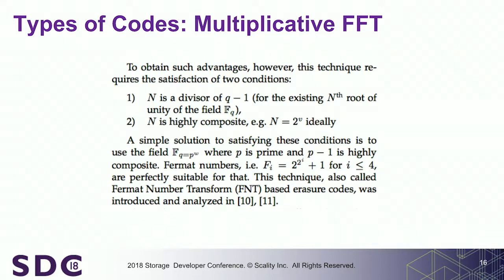The two fields of interest for us are F257 and F65537. Those fields are super interesting because they are highly composite — the cardinality minus one of those fields can be expressed as a power of two. So we can divide and divide and divide the number of operations down to logarithmic complexity.